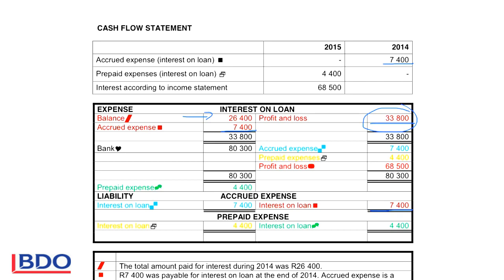On the first day of the next year, we have to reverse this entry. So accrued expense will now be debited with $7,400 so that we don't have a balance in the accrued expense account, and we will credit interest on loan to show that we still owe money for the previous year. So if there is an accrued expense at the end of 2014, accrued expense is a liability with a credit balance. If we do the reverse entry on the first day of the next year, we will debit the accrued expense and credit interest on loan.